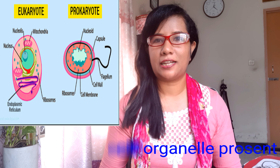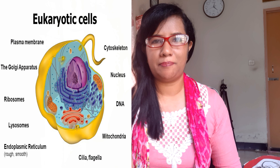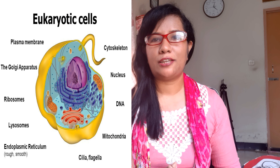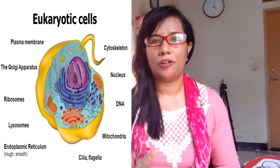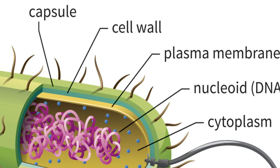Eukaryotic cells have many types of cell organelles present, and some organelles are bounded by a single membrane, for example lysosomes, Golgi body, and vacuoles.